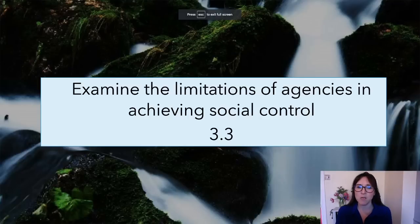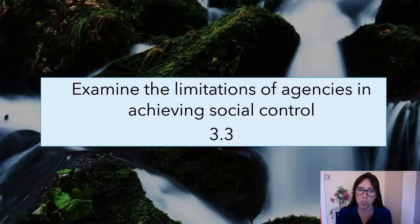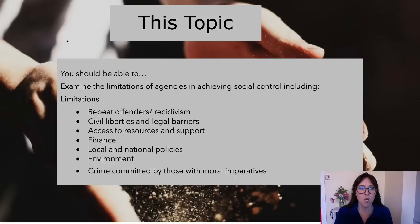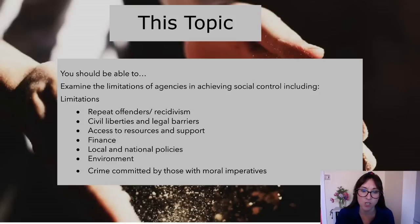This one is for Unit 4 and it is the final topic, 3.3. So let's get started. 3.3 is: examine the limitations of agencies in achieving social control. Limitations means weaknesses, so it's about evaluating social control and the agencies and actions within these. You should be able to examine the limitations of agencies including repeat offenders and recidivism, civil liberties and legal barriers, access to resources and support, finance, local and national policies, environment, and crime committed by those with moral imperatives.